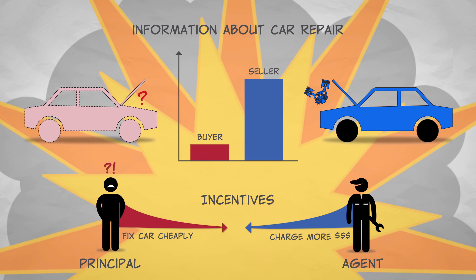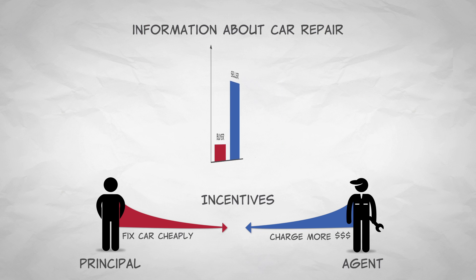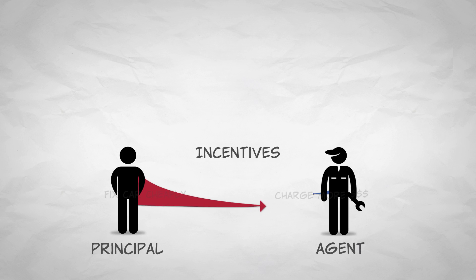In this case, there are conflicting incentives and you don't have the information to know a good deal from a bad deal. Ideally, you would like to align the incentives of the mechanic with yours so you don't get swindled. That is, at least in principle, how you can solve a principal-agent problem.